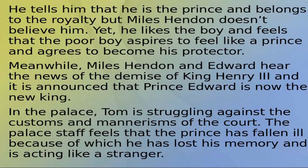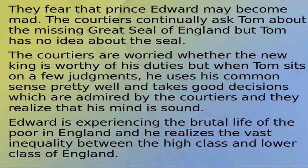Meanwhile, Miles Hendon and Edward hear the news of the demise of King Henry, and it is announced that Prince Edward is now the new king. In the palace, Tom is struggling against the customs and mannerisms of the court. The palace staff feel that the prince has fallen ill and has lost his memory, acting like a stranger. The staff fear Prince Edward may become mad. The courtiers continually ask Tom about the missing Great Seal of England, but Tom has no idea. However, when Tom sits on a few judgments, he uses his common sense well and takes good decisions, which are admired by the courtiers.